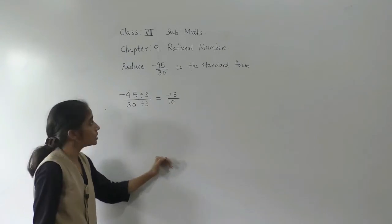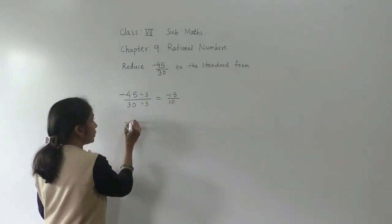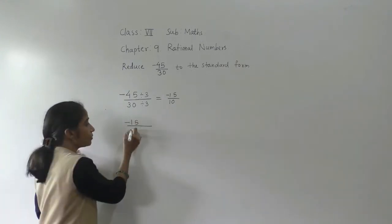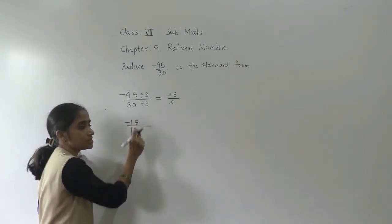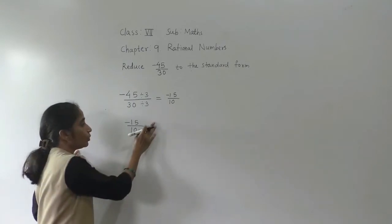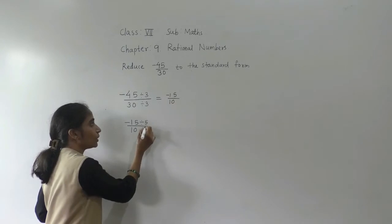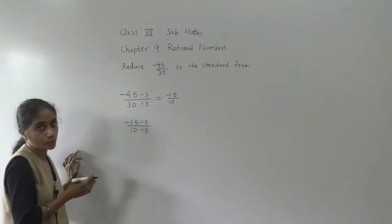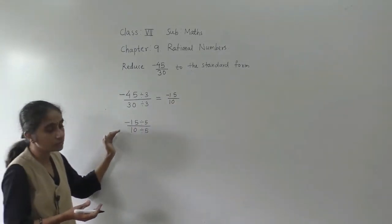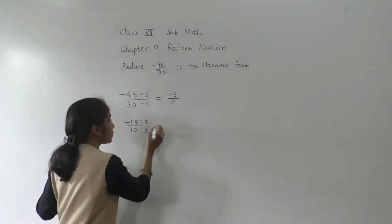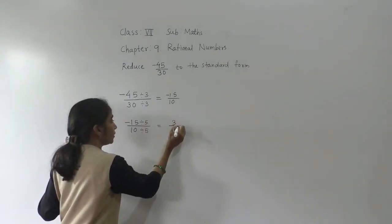Minus 15 upon 10 — we can do the reduced term again. Both numbers are divisible by 5, so divide both numerator and denominator by 5. 5 threes are 15, 5 twos are 10.